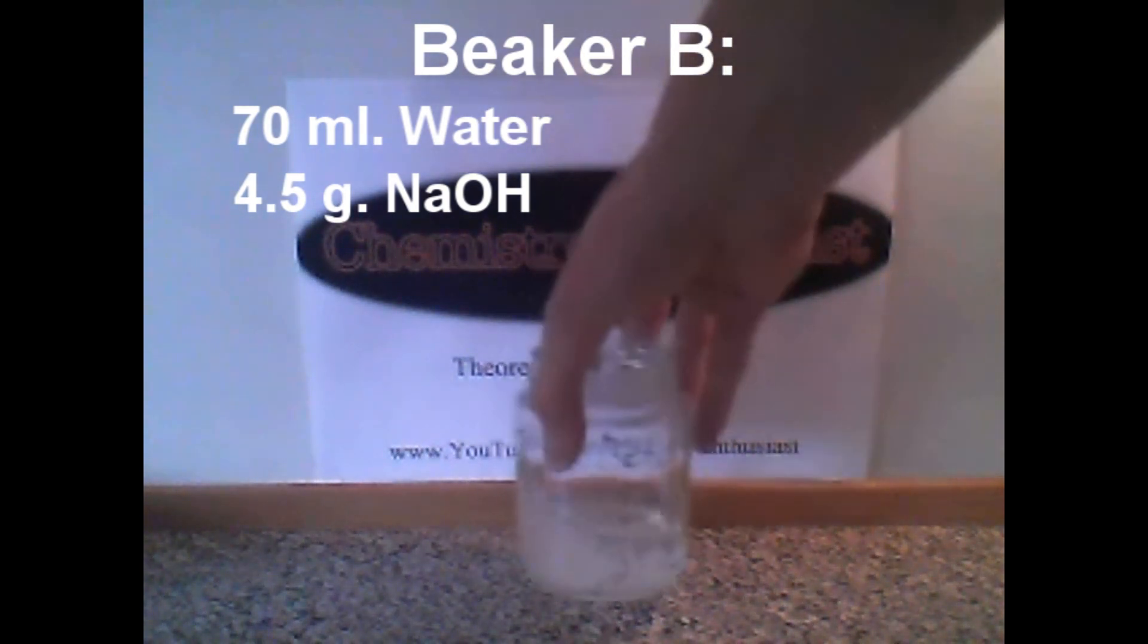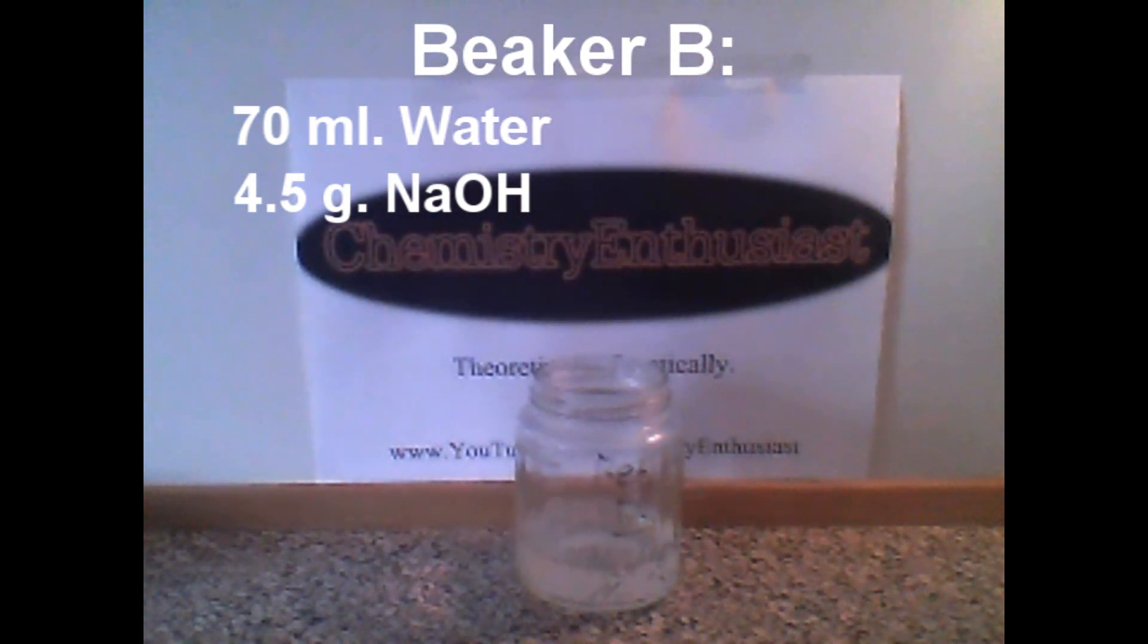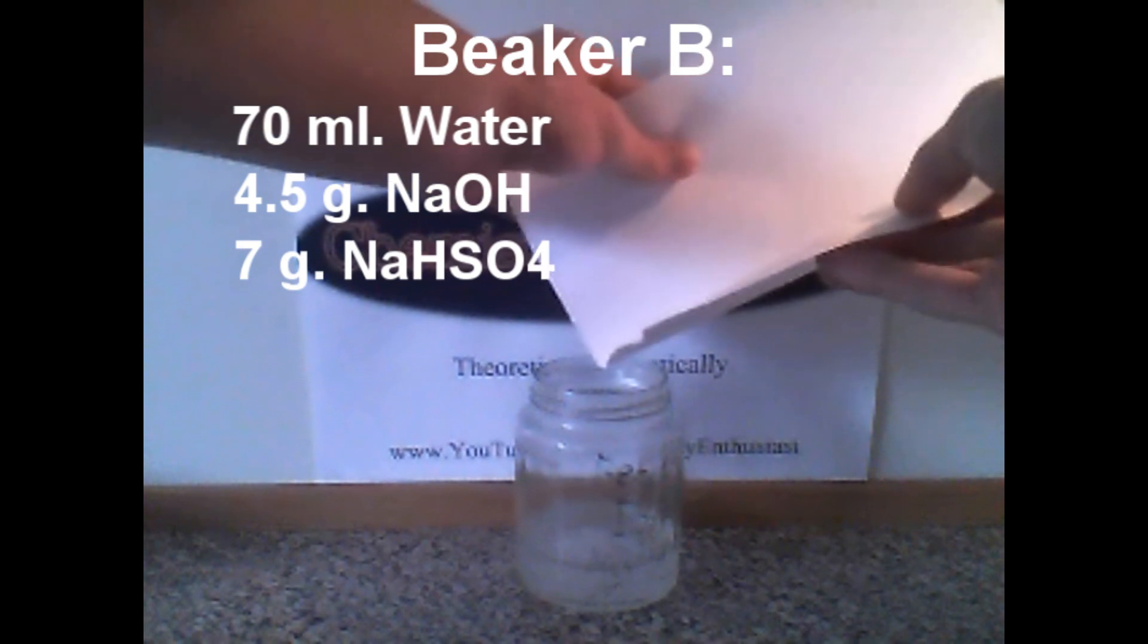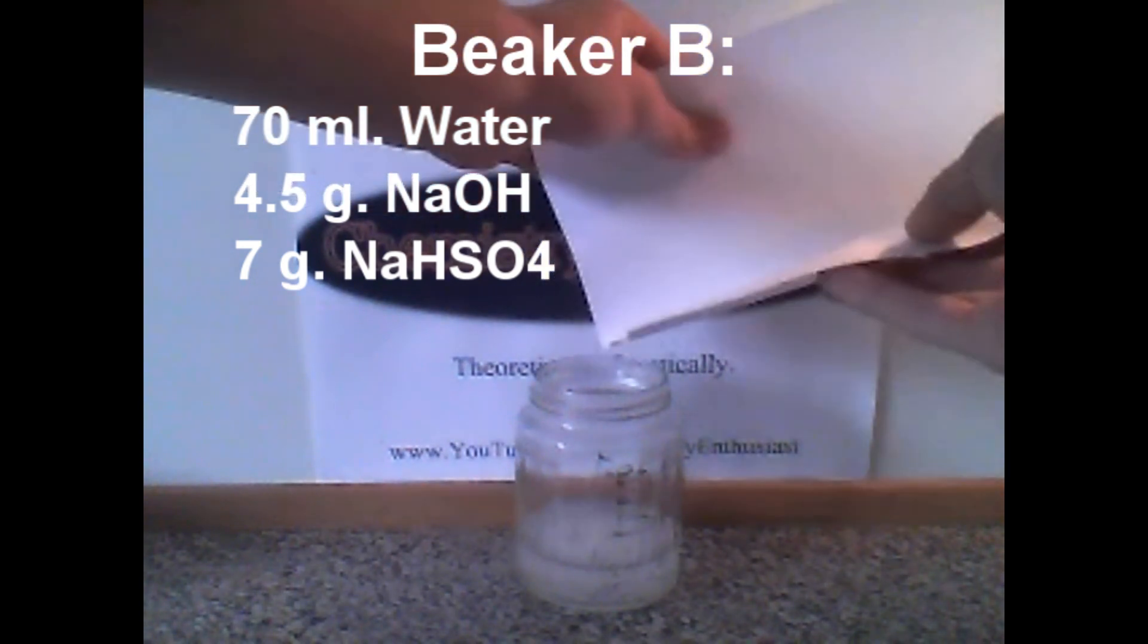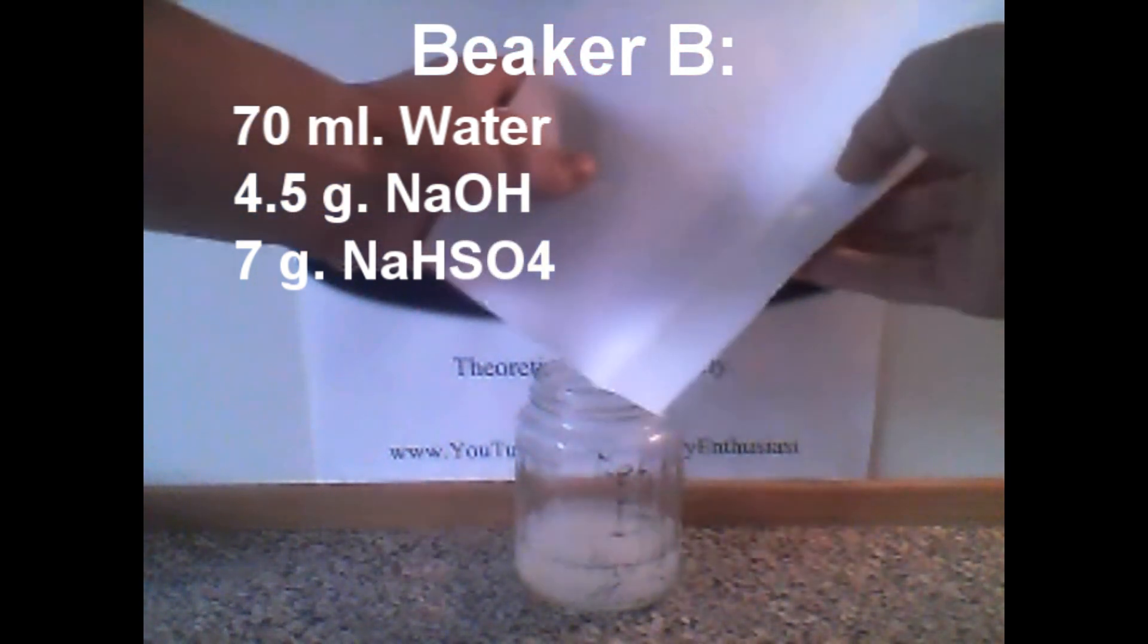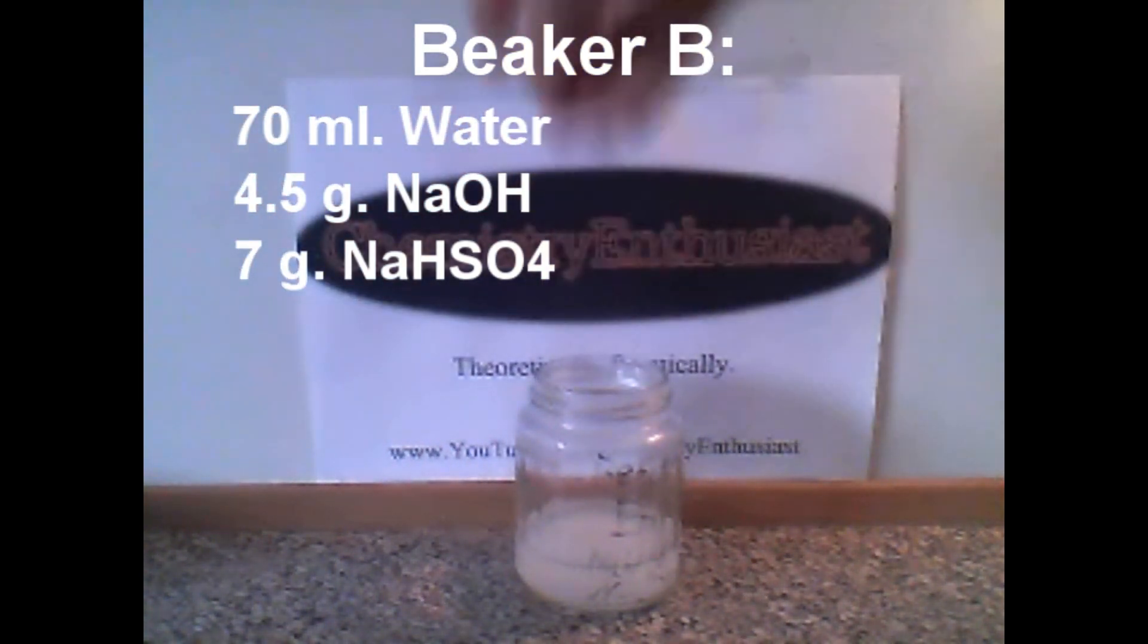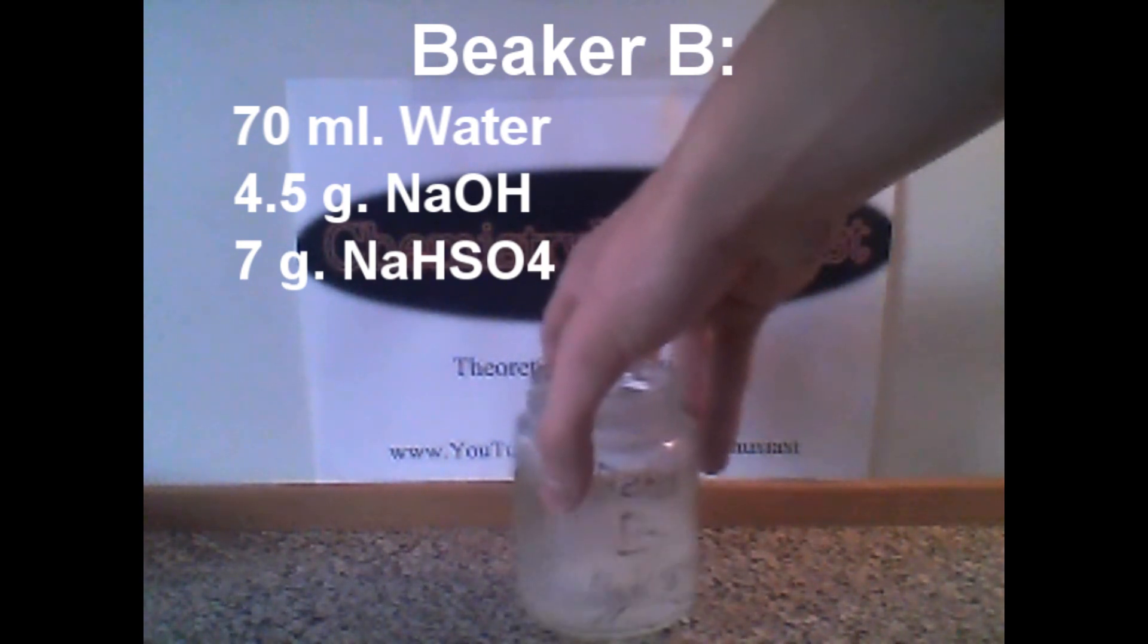Now after all the sodium hydroxide has dissolved, involving a lot of heat, then add 7 g of sodium hydrogen sulfate, which is also known as sodium bisulfate. These chemicals shouldn't be that difficult to dissolve in the water. As you can see, it is dissolving very quickly, almost instantly.